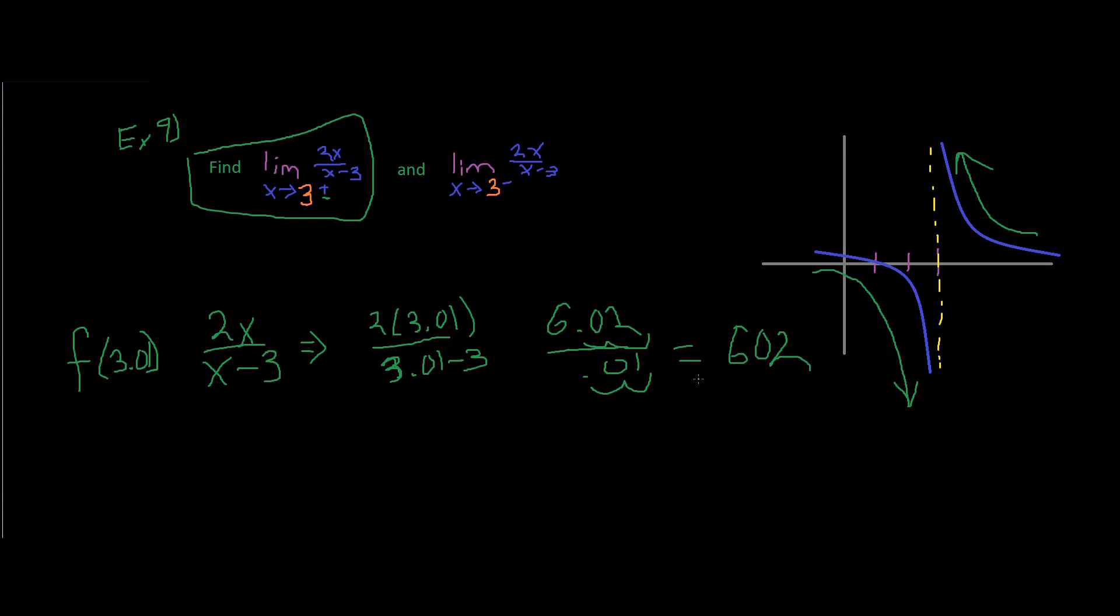So, we get 602. So, from the right-hand side, right? Because this is what it says. It appears that it's approaching infinity. So, then you could put equals infinity. It doesn't mean that this exists, right? It just means that it approaches infinity.